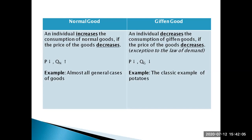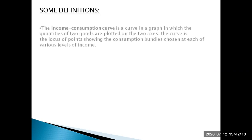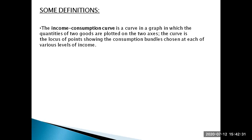I may do a video later explaining and illustrating the classic example of potatoes and meat, which is used to explain the concept of giffen goods. Next, let's cover some definitions before moving on. The income consumption curve (ICC) is a curve on a graph where quantities of two goods are plotted on the two axes — good X on the horizontal axis and good Y on the vertical axis. The curve is the locus of points showing the consumption bundles chosen at each of the various levels of income. As income changes, you change your consumption bundles, and the ICC tracks these bundles throughout changes in income.